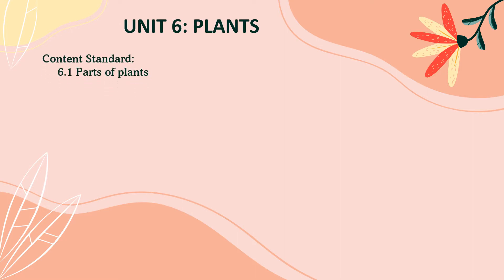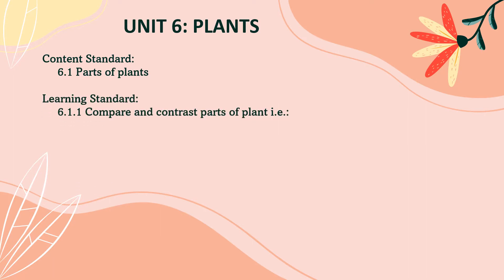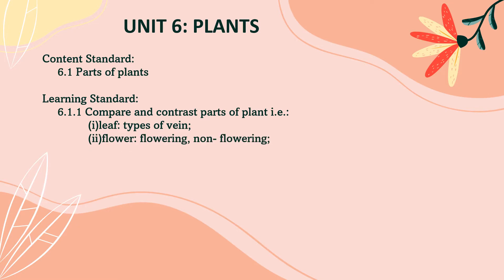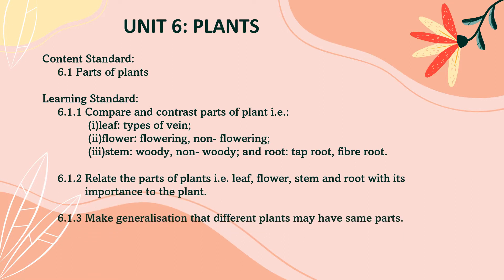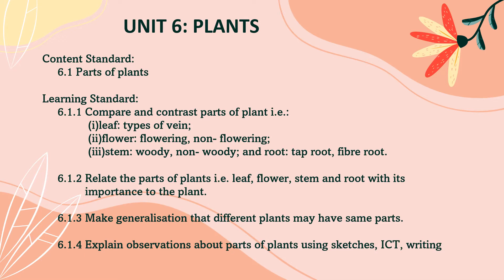Our content standard is 6.1 Parts of Plants. Our learning standard is 6.1.1: compare and contrast parts of plants — leaf types, flower (flowering or non-flowering), stem (woody or non-woody), and root (tap root or fibrous). 6.1.2: relate the parts of the plant — leaf, flower, stem, and root — with their importance to the plants. 6.1.3: make a generalization that different plants may have the same parts. And 6.1.4: explain observations about parts of plants using sketches, ICT, writing, or verbally.